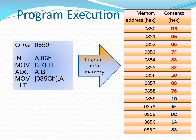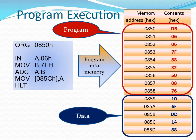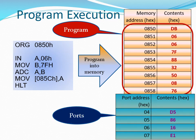That is the 8085 machine code for the program. The diagram also shows the contents of the data section of memory. The program section is inside the red border, and the data section is inside the blue border. Our program starts from 0850 and ends at 0858. Our data starts at 0859 and ends at 085D. Inside those memory locations are the values initially loaded there. On port 04, the value present is 05, and on port 06, the value is 16.